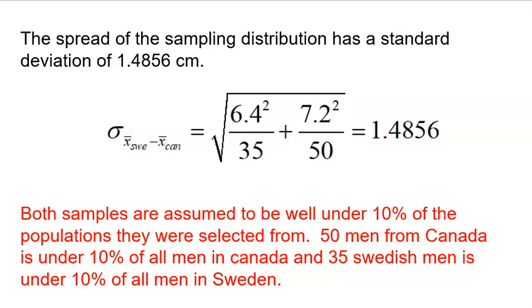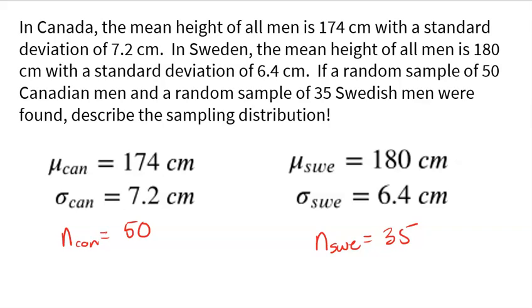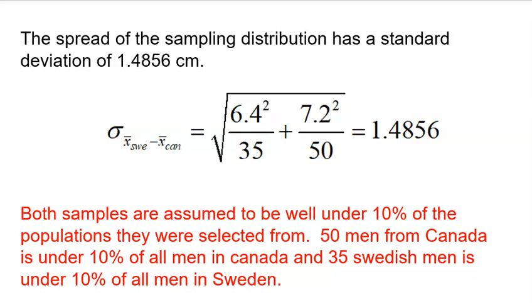Number one error that kids make is they forget to square those two numbers on top. You don't actually have to write down what 6.4 squared is. Just put the little square on it. Your calculator is going to do all the heavy lifting for you. The other thing a lot of kids do is they accidentally flip-flop the 35 and the 50, so that's why having a little table here organized helps. That way you remember 50 is for the Canadians, so the 50 needs to go up to 7.2, 35 needs to go up to 6.4. The third mistake is some kids will accidentally use the means of 180 and 174 in this formula. No, use the standard deviations in this formula.